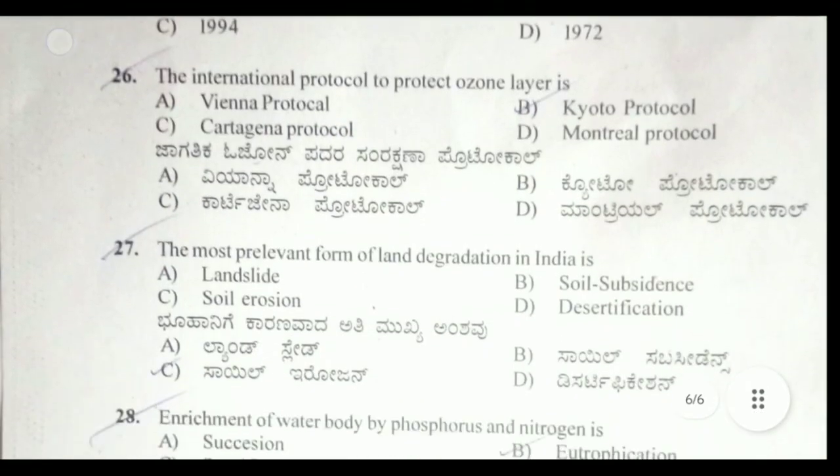Twenty-sixth question: the international protocol to protect the ozone layer — the correct answer is the Montreal Protocol, not the Kyoto Protocol. Remember it. Twenty-seventh question: the most prevalent form of land degradation in India is soil erosion, option C.